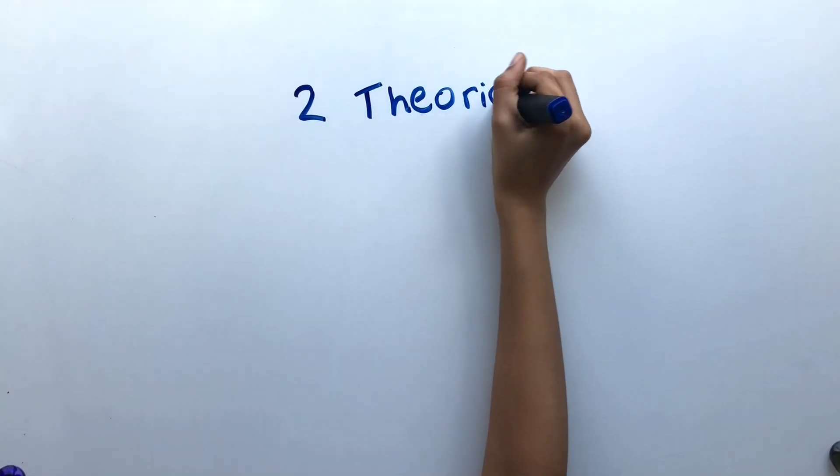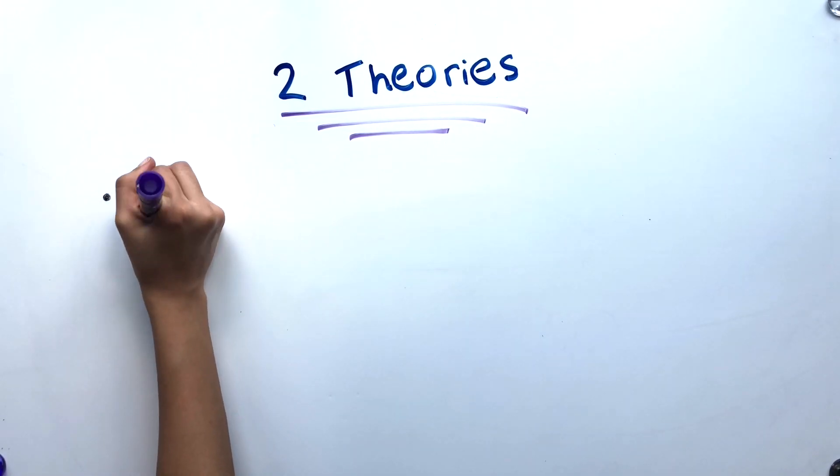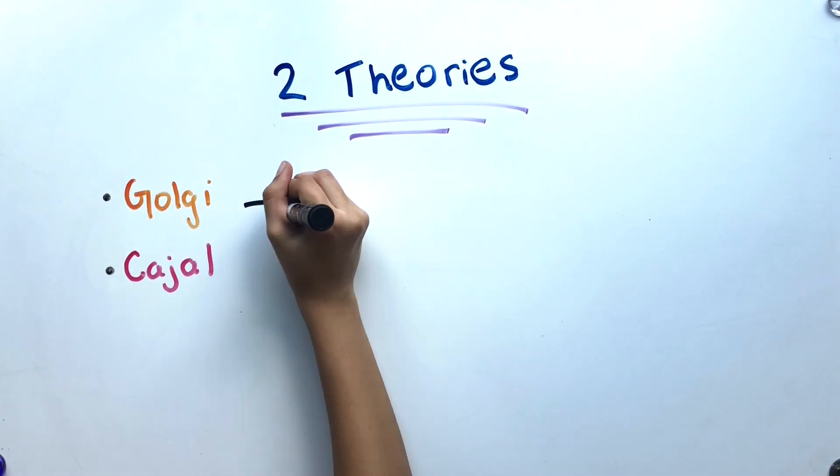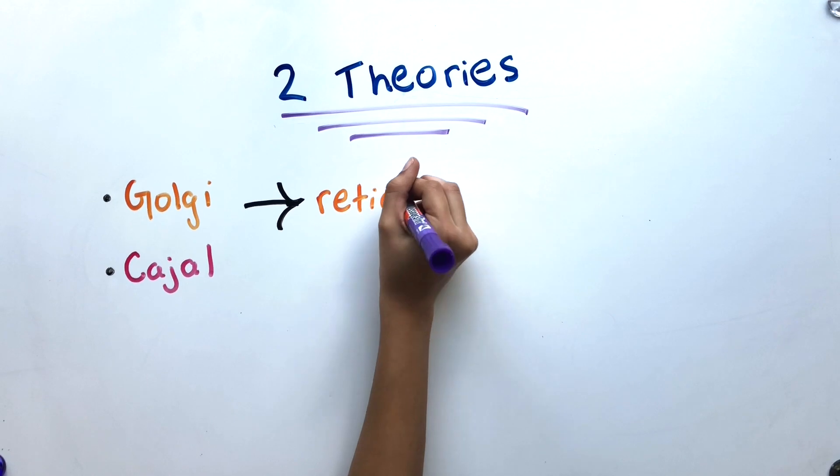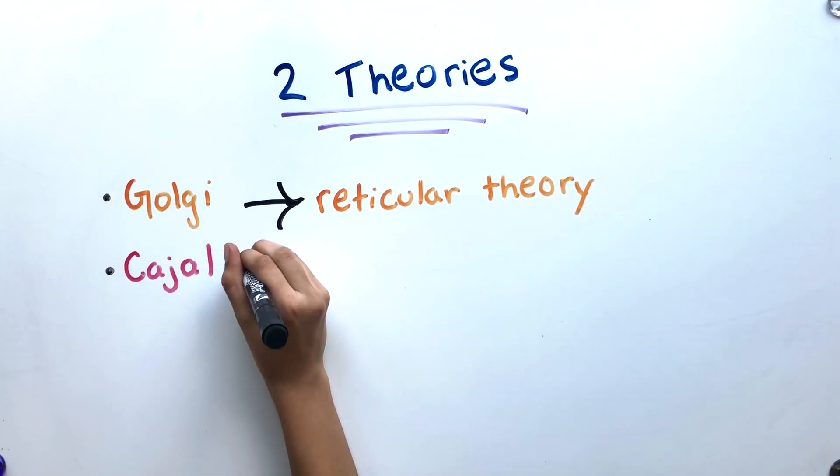These discoveries from Golgi stains resulted in two opposing theories, one from Golgi himself and the other from the Spanish histologist Santiago Ramon y Cajal. Golgi developed the reticular theory, in which neurites of different cells form a continuous reticulum, or network.